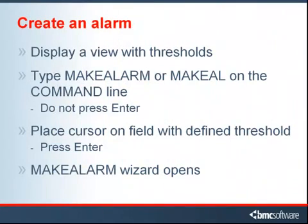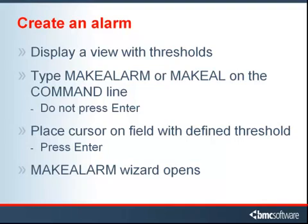To begin creating an alarm from a MainView product that is running in Windows mode, display a view that has thresholds set for one or more fields. From the selected view, type make alarm or make AL on the command line, but do not press enter. Place the cursor in the field with the threshold you want to report on when the exception occurs, then press enter.